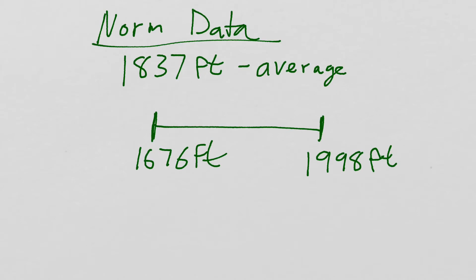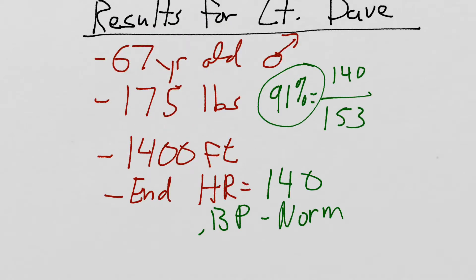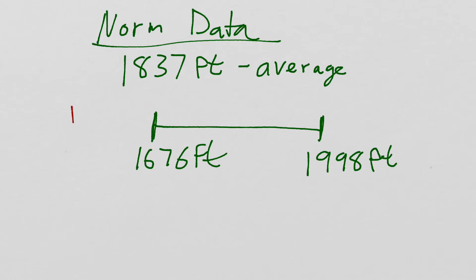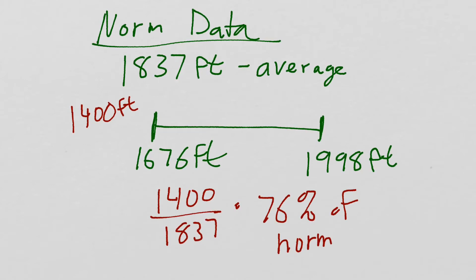Looking at normative data, for a 67-year-old male, according to a systematic review by Bohannon in 2007, the average is about 1,800 feet, with a 95% confidence interval from about 1,600 up to about 2,000 feet. Lieutenant Dave was at 1,400 feet — outside the 95% confidence interval — telling us he's probably a little deconditioned, his endurance isn't where it should be, and his aerobic capacity is below normal. In detail, he's only about 76% of the normative value, clearly below where he needs to be.